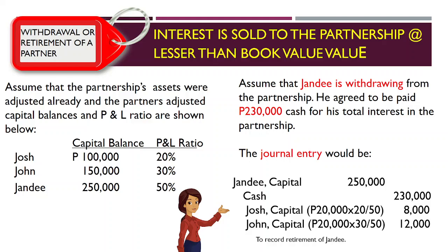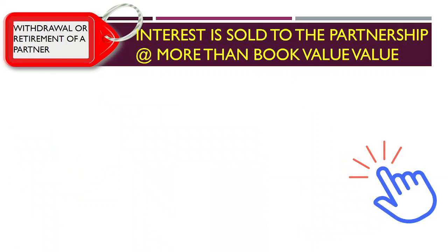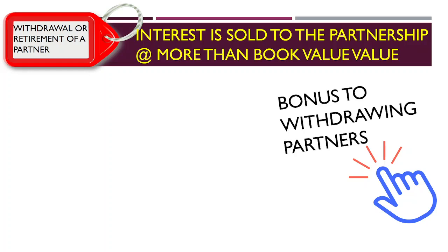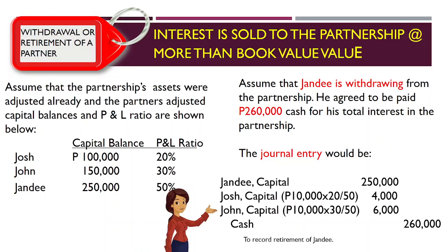But if the payment to Jandy is $260,000, which is more than the book value or more than his adjusted capital credit, the $10,000 excess is treated as a bonus given by the partnership to the withdrawing partner Jandy. The entry debits Jandy capital $250,000 and debits the remaining partners' capital accounts for the bonus distributed according to their profit and loss ratio — Josh $4,000 and Chan $6,000 — and credits cash $260,000.